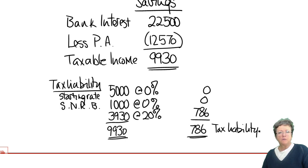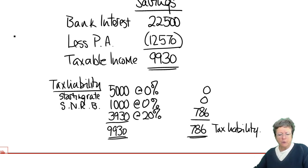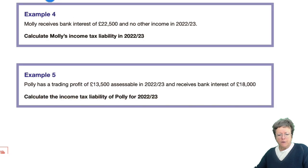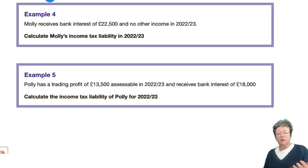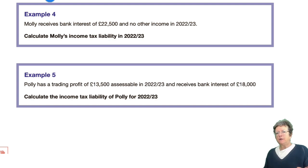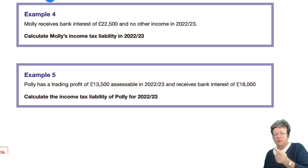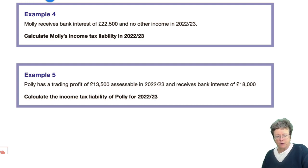So that's a situation where both of those rules apply in the same case. These examples are designed to show the various different types of situations you could get. These could be part of a multiple choice question in section A of an exam, or in section B where you've got a scenario and one of the questions asks how much tax would apply on bank interest alone.